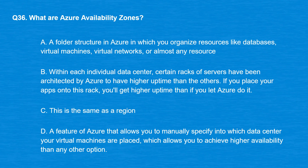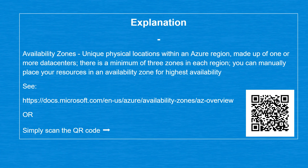Question 36: What are Azure availability zones? Option A: A folder structure in Azure to organize resources. Option B: Certain racks within a data center architected for higher uptime. Option C: The same as a region. Option D: A feature of Azure that allows you to manually specify which data center your virtual machines are placed in, achieving higher availability. The correct answer is Option D. Availability zones are unique physical locations within an Azure region, made up of one or more data centers, with a minimum of three zones per region. You can manually place resources in an availability zone for highest availability.